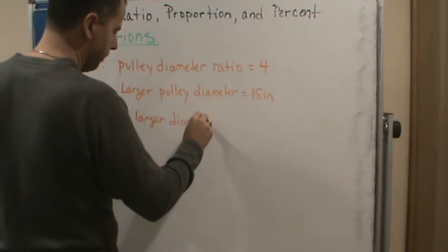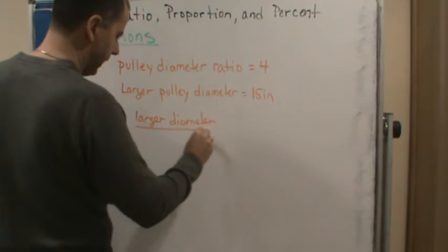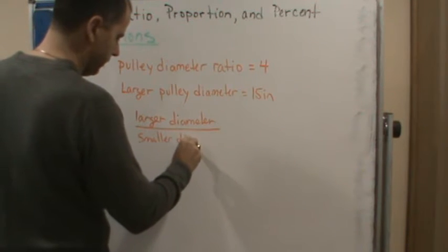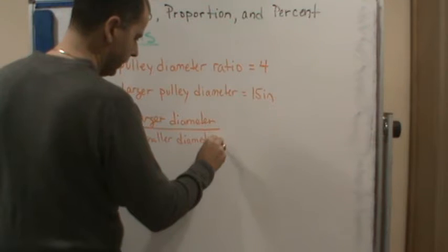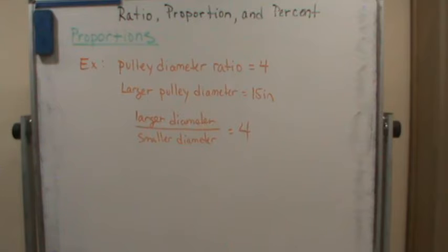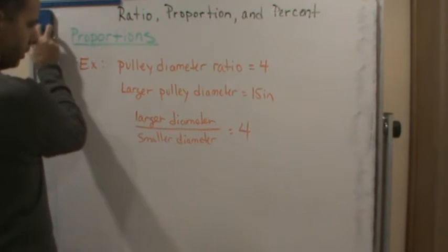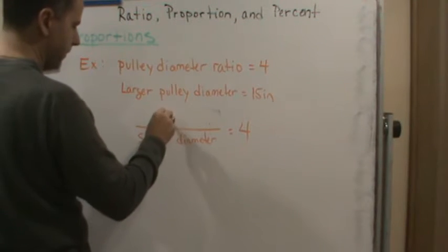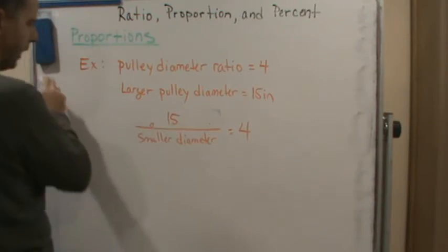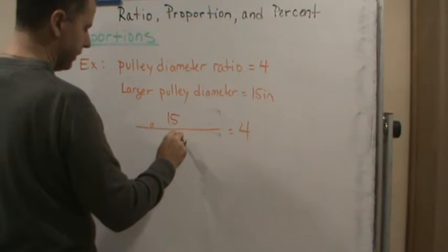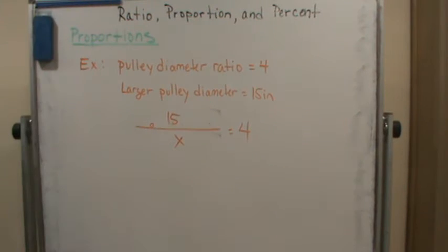So larger diameter divided by smaller diameter equals the pulley diameter ratio, which is 4. And we know that the larger pulley diameter is 15 inches. What we want to find is the smaller pulley diameter, which we'll call x.